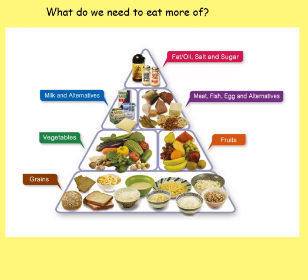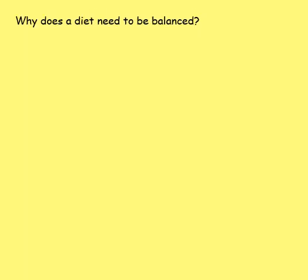Looking at our last learning objective for today: why does a diet need to be balanced? If it's important that we eat a balanced diet, why is it important to eat a certain amount of fruit and vegetables and not eat too much sugar? I want you to pause the video and think about the importance of why it needs to be a balanced diet.